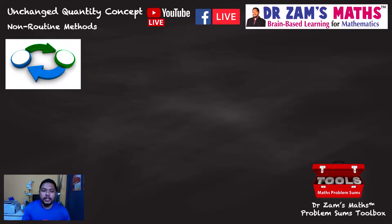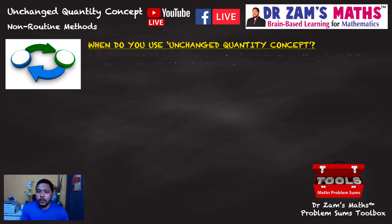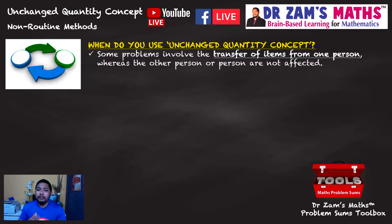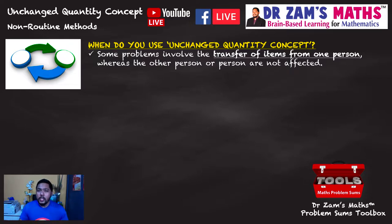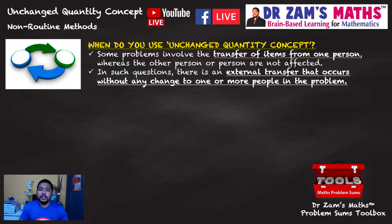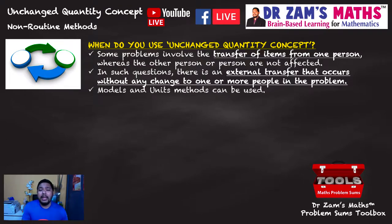For external transfer unchanged quantity: some problems involve the transfer of items from one person, but the other people are not affected — only one person's amount changes. The before-and-after only applies to one person, while the rest have no change. In such questions, external transfer occurs, meaning there is no change to the other people — only one person gets changed.